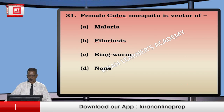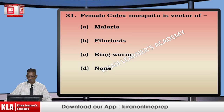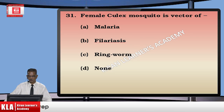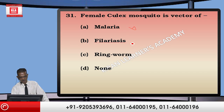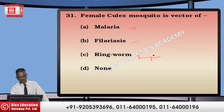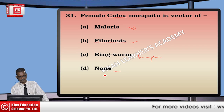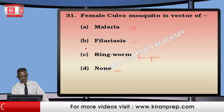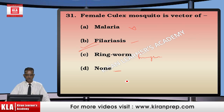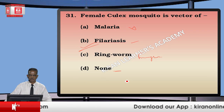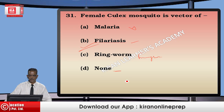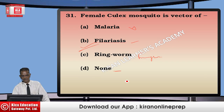The female Culex mosquito is the vector of filariasis, not malaria — that is caused by the Anopheles mosquito. Ringworm is a fungus and not vector-transmitted. So the correct option is filariasis, which is transmitted by the female Culex mosquito. This condition is also known as elephantiasis.